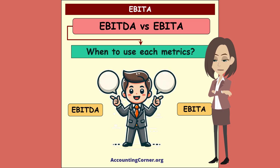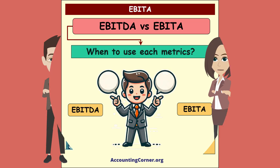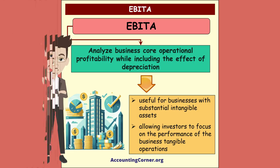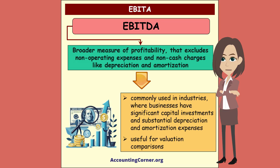Let's compare two financial metrics. EBITA is earnings before interest, taxes, and amortization, while EBITDA is earnings before interest, taxes, depreciation, and amortization. EBITA is used to analyze business core operational profitability while including the effect of depreciation — it is useful for businesses with substantial intangible assets, allowing investors to focus on the performance of the business's tangible operations. EBITDA is a broader measure of profitability that excludes non-operating expenses and non-cash charges like depreciation and amortization. It is commonly used in industries where businesses have significant capital investments and substantial depreciation and amortization expenses, and is also useful for valuation comparisons.